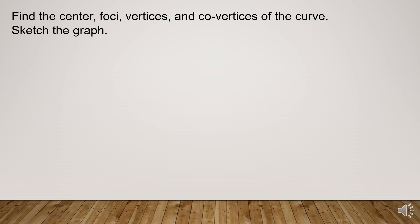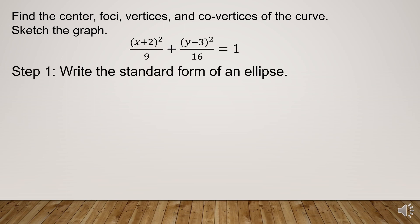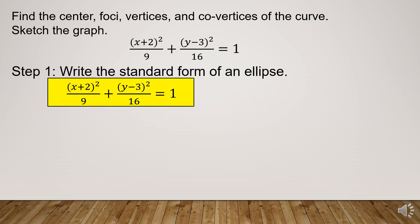Let's do this. Find the center, foci, vertices, and co-vertices of the curve, and sketch the graph of the given ellipse. Step 1: write the equation in standard form. The given ellipse is already in standard form. The denominator of the x term is a squared, which is 9, a perfect square equal to 3 squared. The denominator of the y term is b squared, which is 16, equal to 4 squared. Therefore, the value of a is 3 and the value of b is 4.